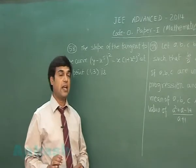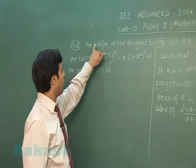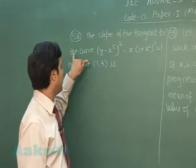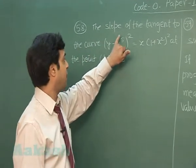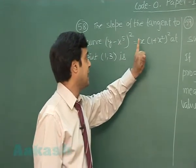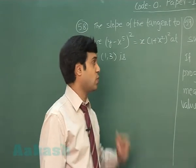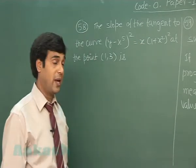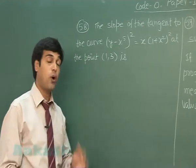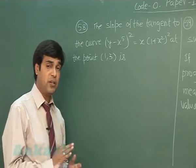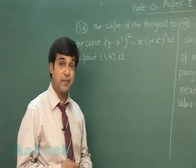Question number 58: the slope of the tangent to the curve (y - x⁵)² = x(1 + x²)² at the point (1, 3). This is a straightforward application of derivatives.